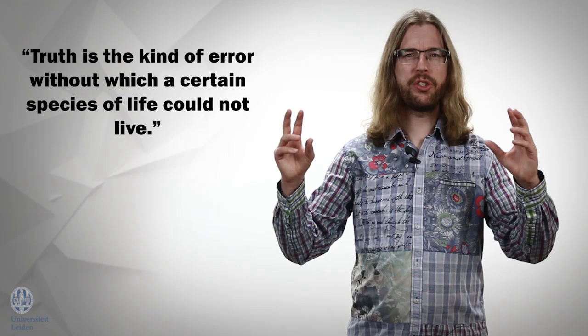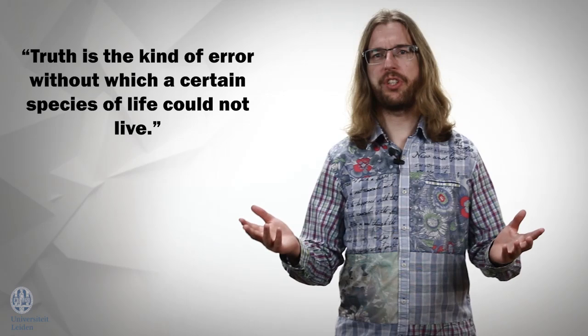So, we shouldn't believe that we can ever know the objective truth. But Nietzsche wants to go further than that. He wants to claim that, in fact, there is no objective truth. Truth is always and necessarily subjective. He writes, Truth is the kind of error without which a certain species of life could not live. Well, what does that mean? How could truth be a kind of error?